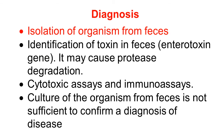Diagnosis of enterotoxemia type A involves isolation and identification of the organism from the faeces, identification of toxin in faeces, antitoxin gene detection, proteolytic degradation assessment, cytotoxic assay, and immunoassay for the toxin. However, culture of the organism from the faeces alone is not sufficient to confirm the diagnosis of disease, because Clostridium perfringens type A is a normal inhabitant of the intestine of animals.